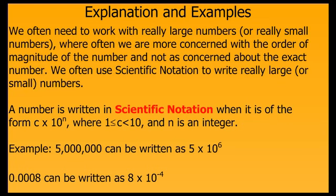A number is written in scientific notation when it is in the form c times 10 to the n, where c is between 1 and 10, and n is an integer.